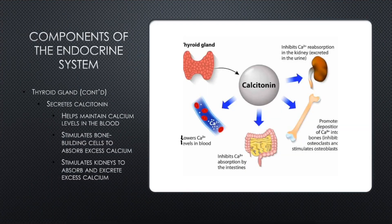In addition to thyroxin, the thyroid gland also secretes calcitonin. Calcitonin helps maintain calcium levels in the blood, and whenever you think of calcium, you think of bones — strong bones require calcium. If you have a poorly functioning thyroid that doesn't produce enough calcitonin, you could have a bone density issue. It stimulates bone-building cells to absorb excess calcium and stimulates the kidneys to absorb and excrete excess calcium — because at some point you have to eliminate it.